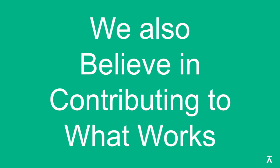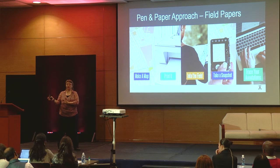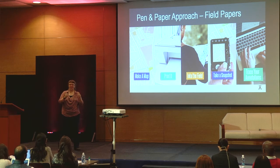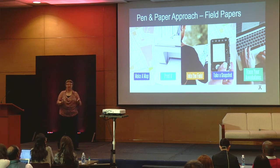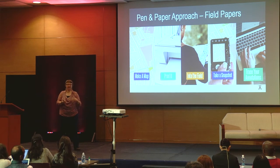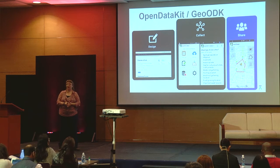We also believe in contributing to what works. One example is Field Papers — if you go to fieldpapers.org, it's a website that allows you to print a map, write on it, take a picture with your mobile phone, and upload it. It has special markings and a QR code that allow it to be automatically geo-referenced, meaning from that picture your paper map is geospatially placed on the Earth. Having a conversation with communities on paper is a lot more effective than trying to do it on a small mobile phone. We also extensively use Open Data Kit and GeoODK, which are offline mobile data collection platforms widely used around the world — Open Data Kit has close to half a million downloads on the Google Play Store.